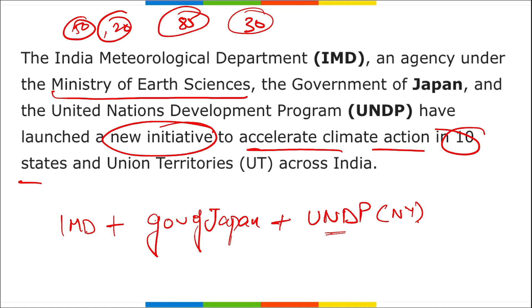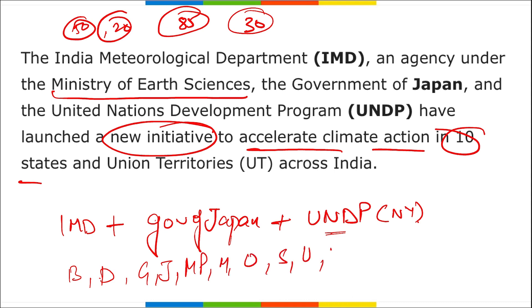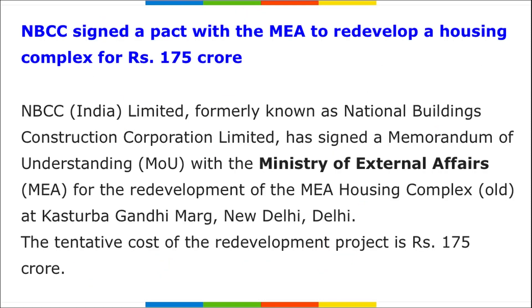The 10 states and union territories covered under this initiative are: Bihar, Delhi NCR, Gujarat, Jharkhand, Madhya Pradesh, Maharashtra, Odisha, Sikkim, Uttarakhand, and Uttar Pradesh. IMD comes under the Ministry of Earth Science; UNDP is headquartered in New York.